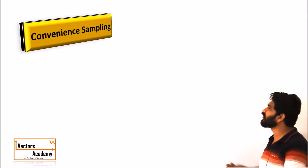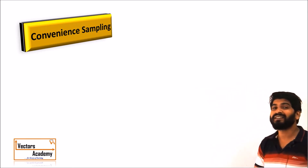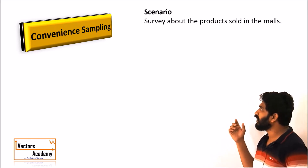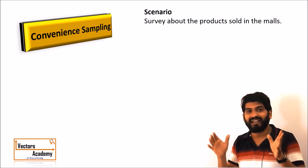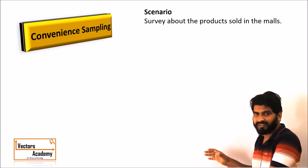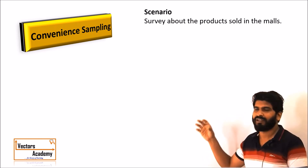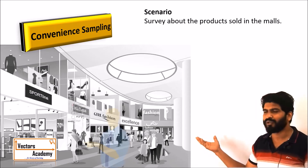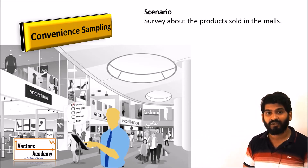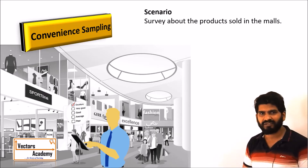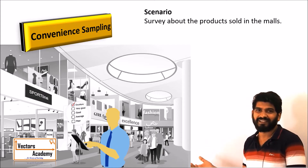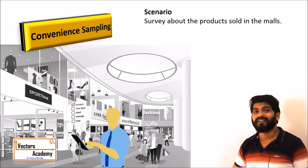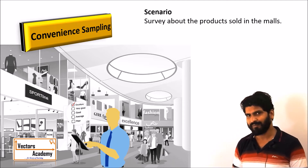Moving on to non-probability sampling, the first type is convenience sampling, which is used to reduce the cost and time of sampling. Whoever is available and ready to participate in a research is selected as a sample. For example, in shopping malls there are often interns who conduct research on shopping habits or for credit cards. Convenience sampling selects readily available samples but does not always give exact results — it simply reduces cost and time.